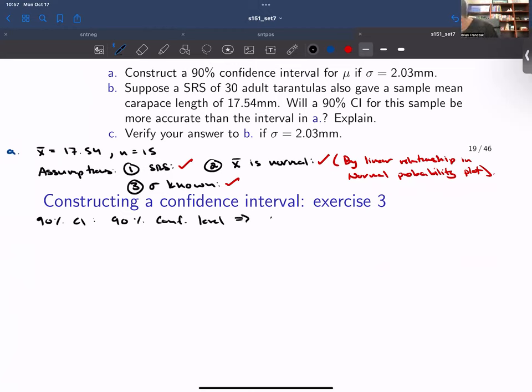So this means that we have a 90% confidence level. This means that alpha is 1 minus 0.90, which is 0.1. That means that our Z score is the Z score 0.1 over 2, which is a Z score on 0.05, which is 1.645.